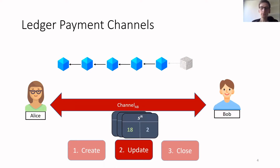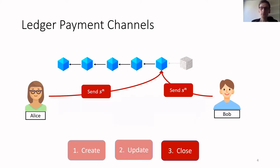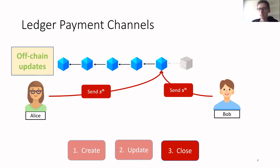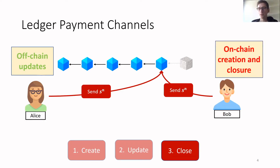This can happen multiple times until some end state Sn, where Alice owns, for example, 18 coins and Bob owns 2 coins. In order to close the channel and actually receive these coins on the blockchain, Alice and Bob send the latest state Sn to the blockchain, which then distributes the coins accordingly. This solution is nice because it allows for off-chain updates, but it still requires on-chain creation and closure, which is suboptimal as off-chain protocols aim to reduce blockchain interaction.